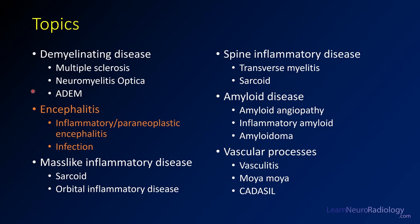We've talked about demyelinating disease. Today we're going to talk about encephalitis. Some of these other things like sarcoid and amyloid we're going to get to in the continuing portions of this lecture, which we'll release as we go along. But today we're going to focus on inflammatory and paraneoplastic encephalitis and infectious encephalitis, which can be a mimic of those autoimmune and inflammatory diseases.